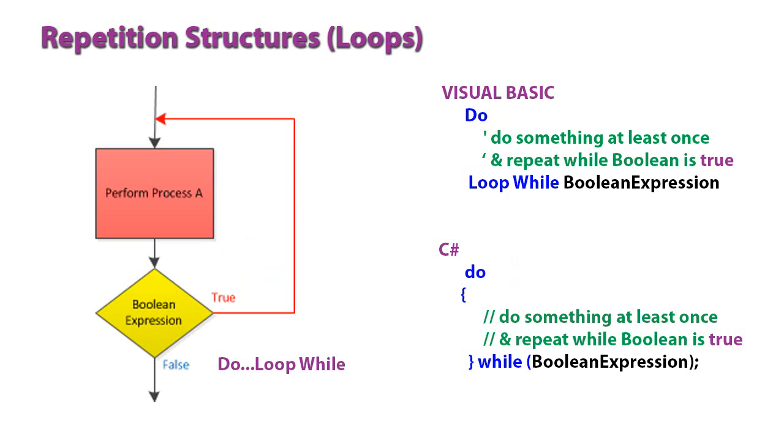Sometimes, however, we want to make sure that process is performed at least once. And you see in the flow chart that as the black arrow comes down, process A is performed. And then the Boolean expression is evaluated. And if it is true, it goes back up and repeats process A.